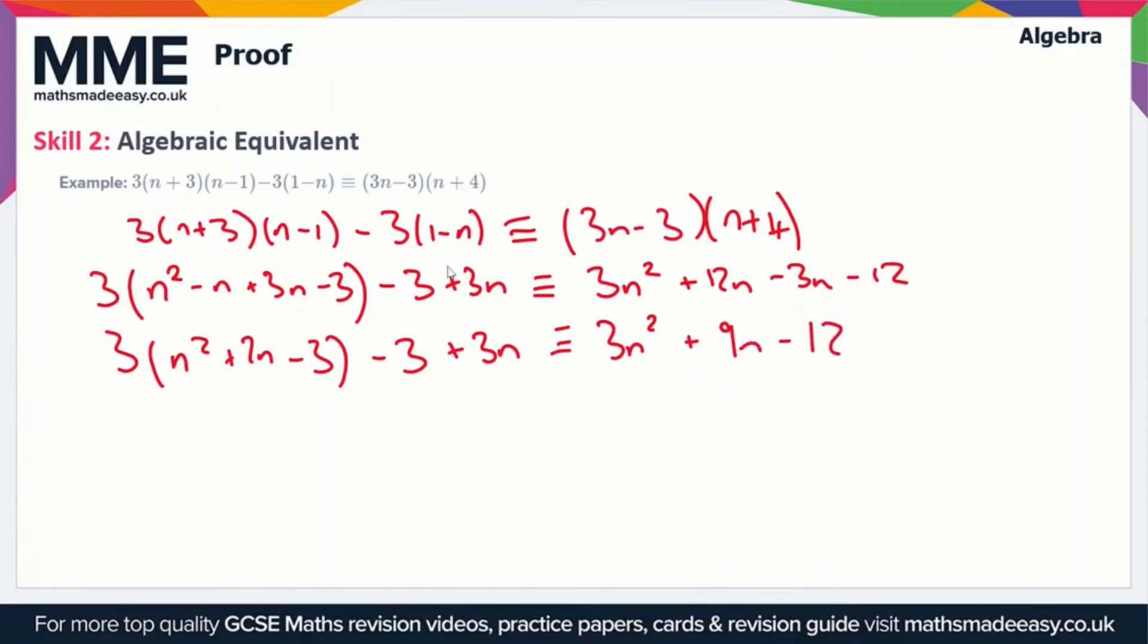So this is really just a case of doing some simple expansions and collecting like terms. The next expansion we'll do is multiplying throughout this bracket by 3. So we get 3n squared plus 6n minus 9 and then we've still got the minus 3 and the plus 3n here.